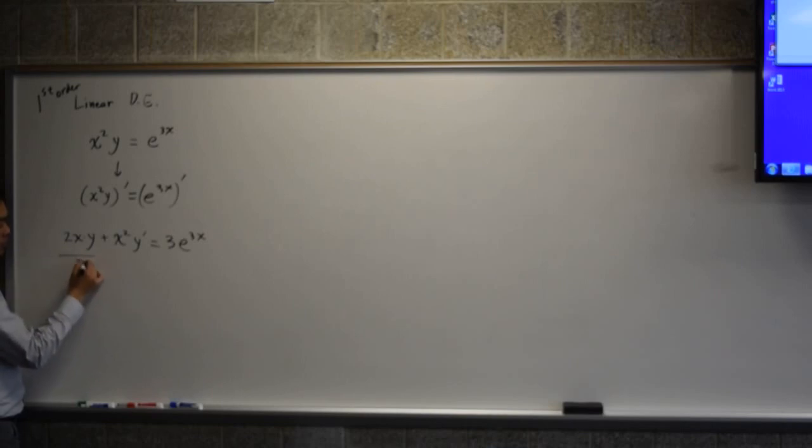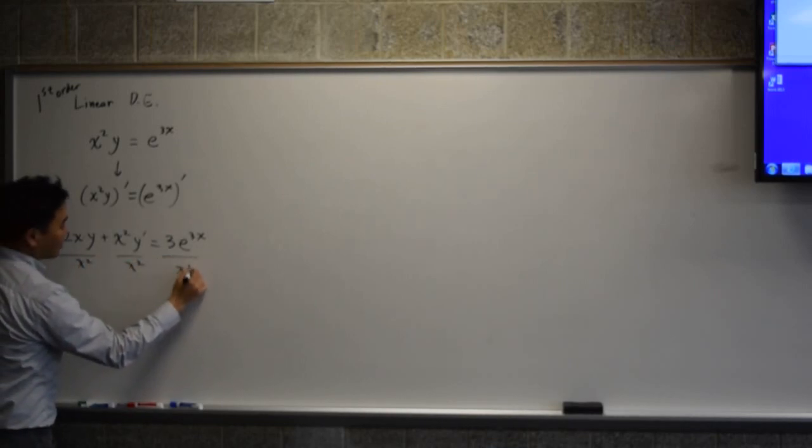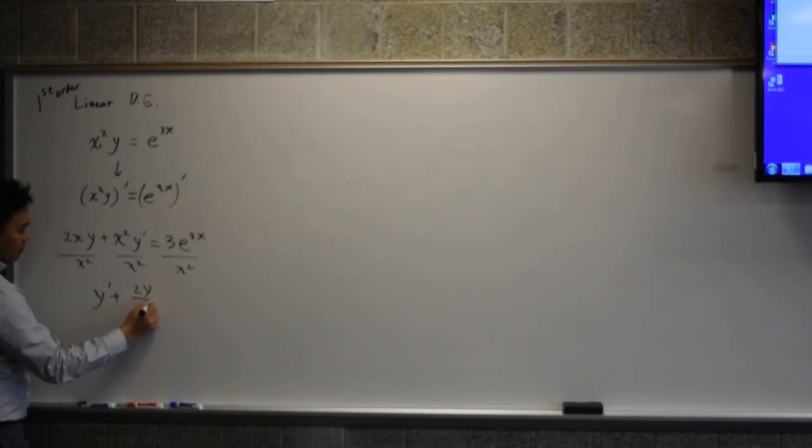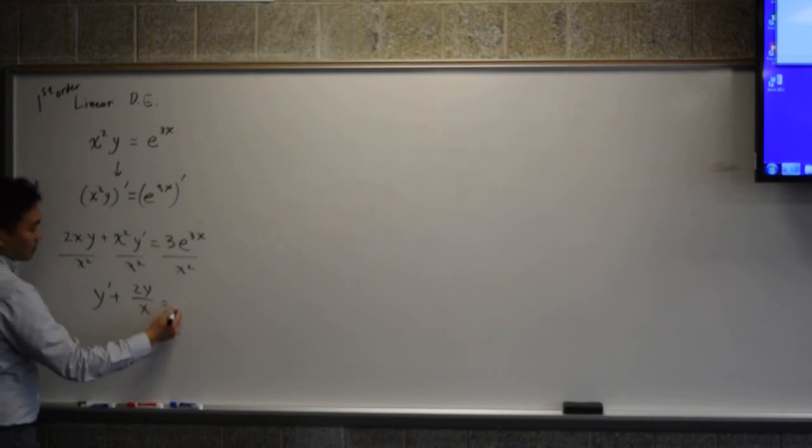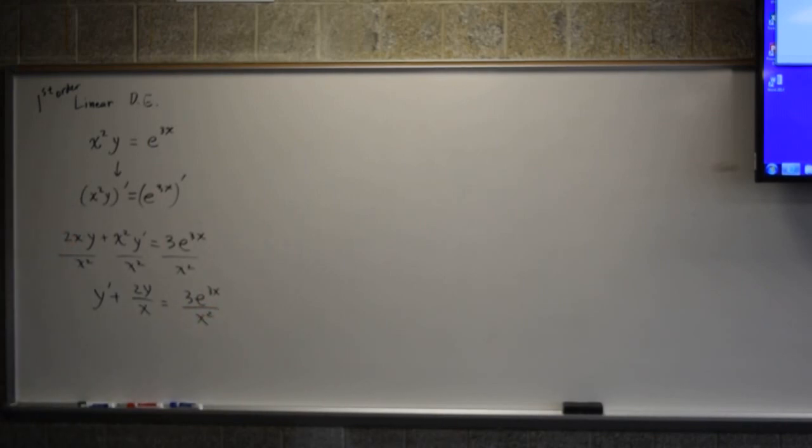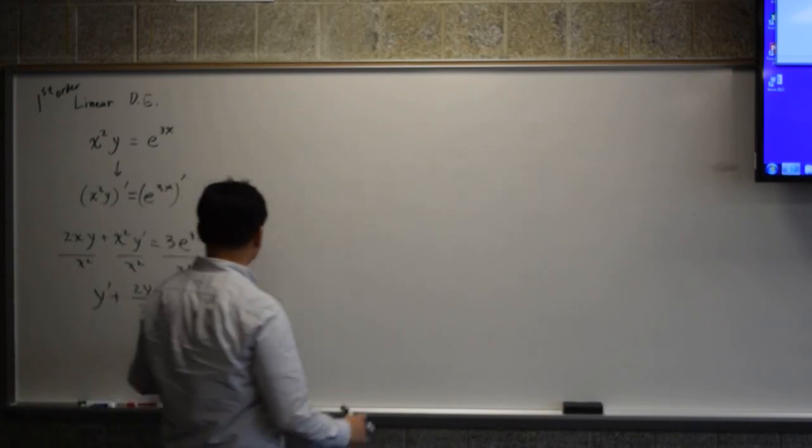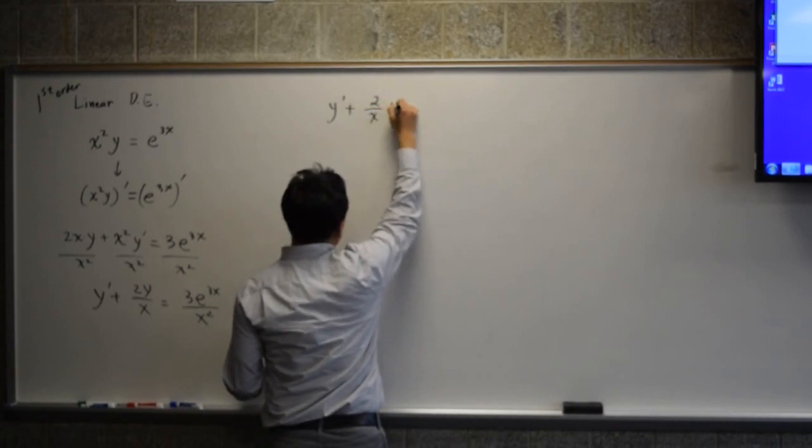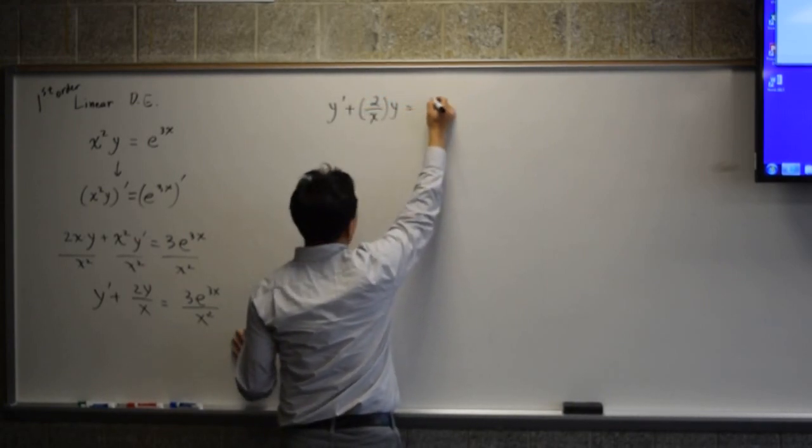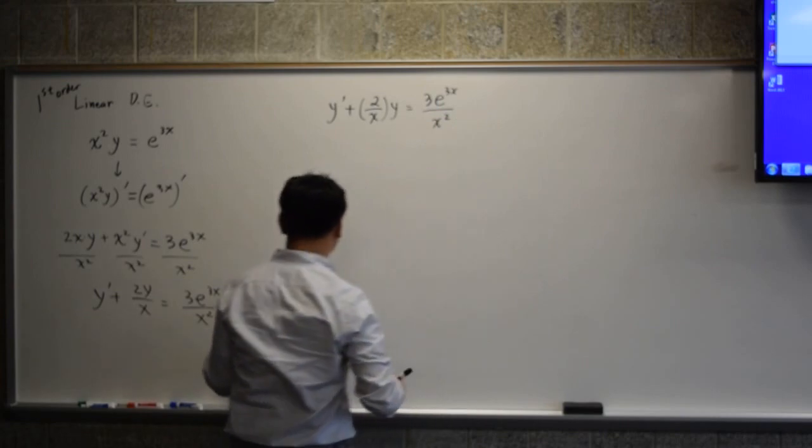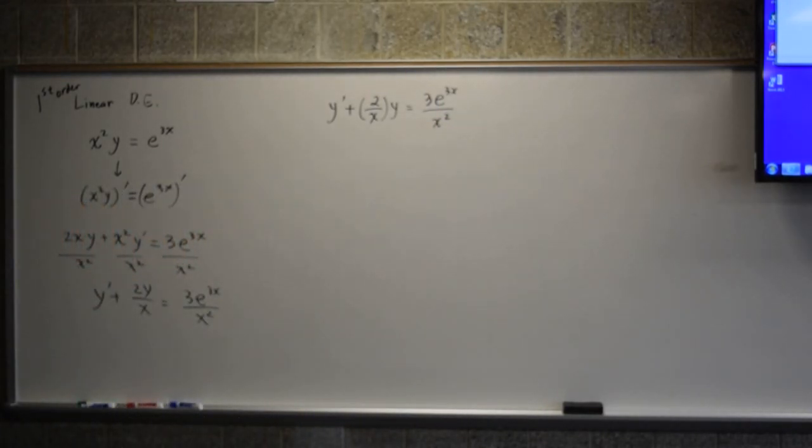So if I divide everything by x squared, I get y prime plus 2y over x. Because x and x squared cancels to leave you with just one x. And this will be 3e to the 3x over x squared.